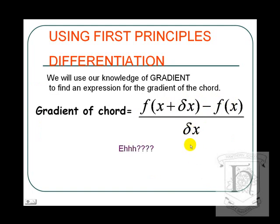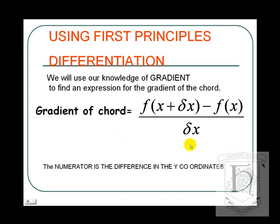Now, this may look a little bit confusing. So, if we just think about it. On the numerator, f(x + δx) is the y coordinate when the x coordinate is x plus delta x.